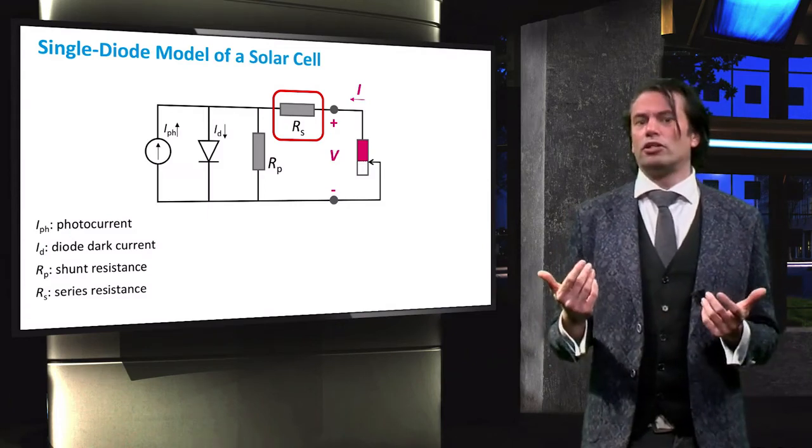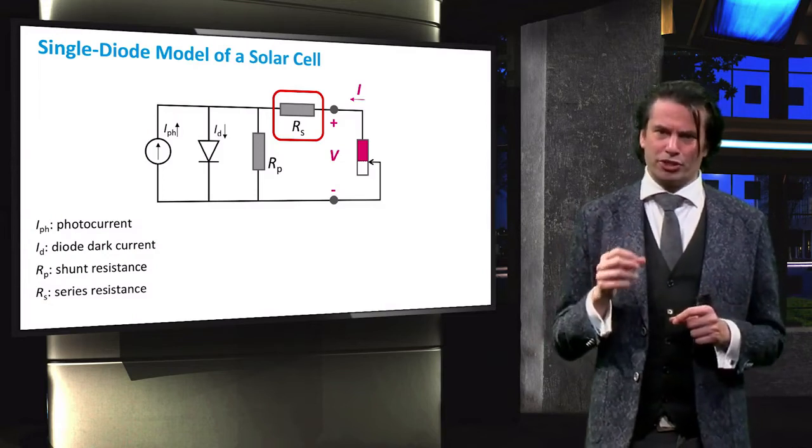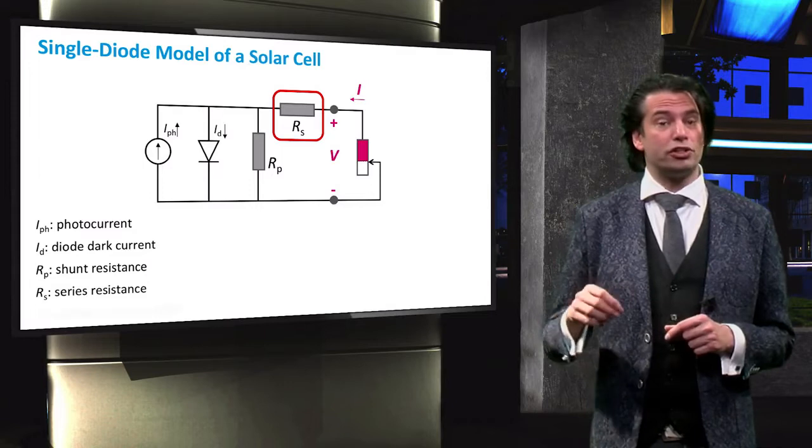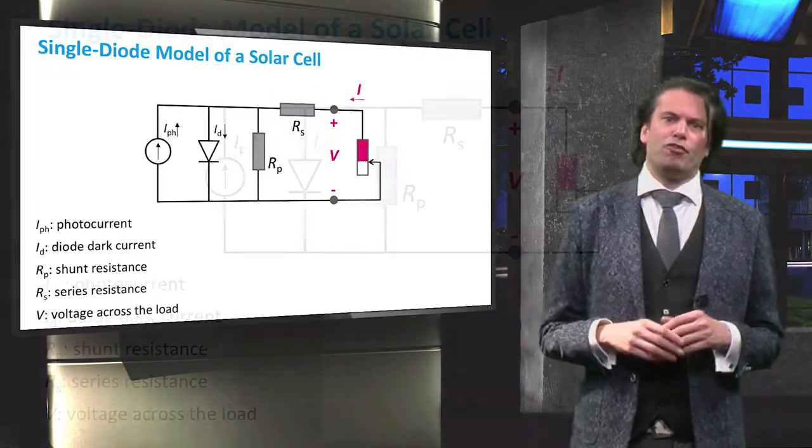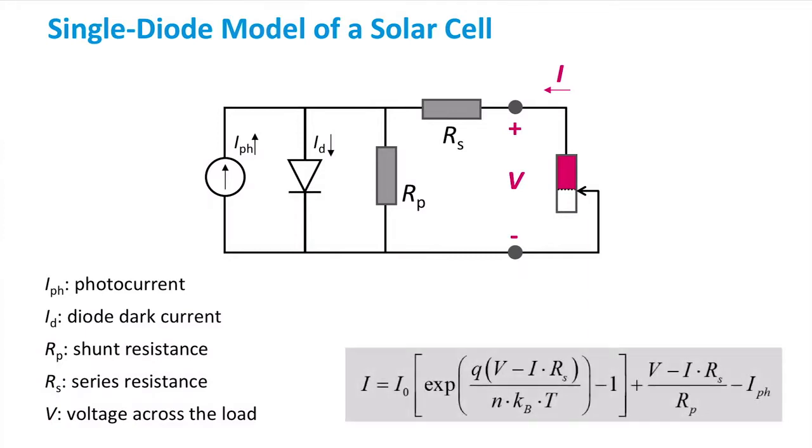Lastly, in our schematic we see our load. We can see a current across it, I, and we see the voltage V. From this circuit we can then solve the equation of determining I as a function of V.